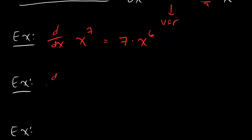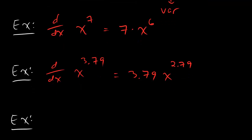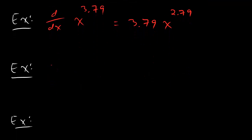How about some other examples? We could have the derivative of x to the 3.79. And then you just bring the first number down. And then you subtract 1. Really easy.